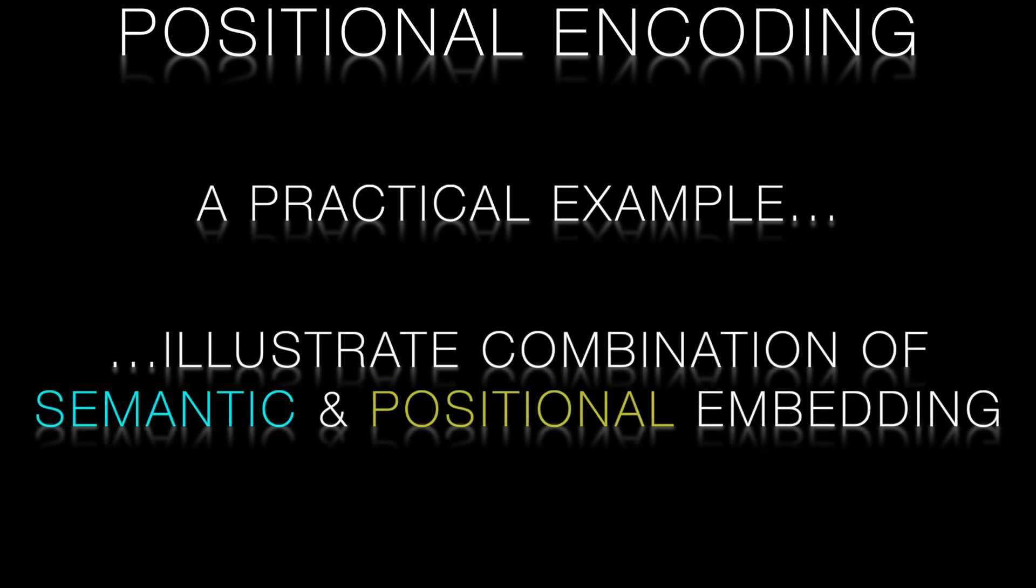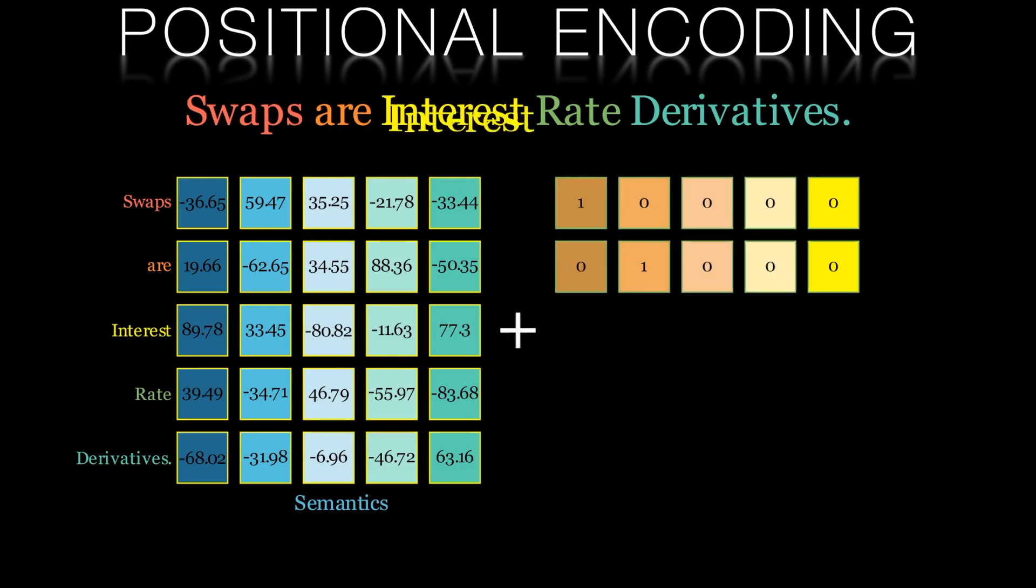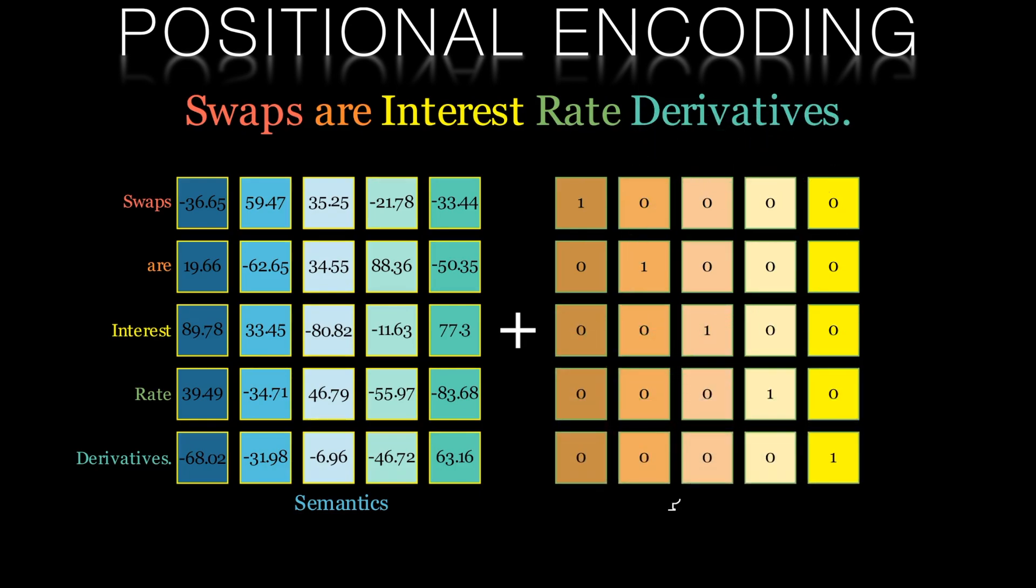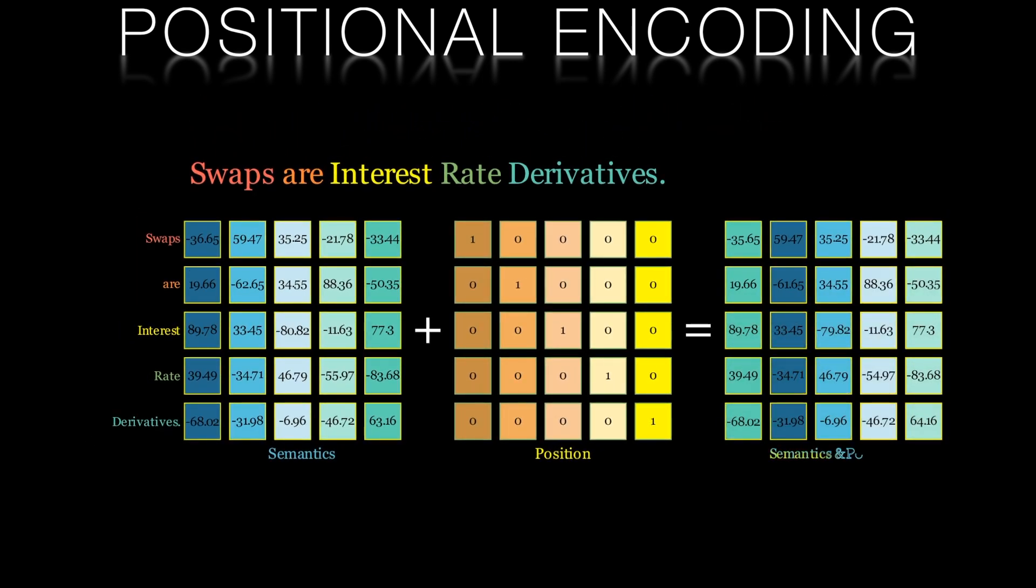Let's look at a practical example to get to grips with some of these ideas. This will also illustrate how semantic embeddings and positional encodings work together. We'll start with a simple sentence: swaps are interest rate derivatives. We can then write out the vectors that represent these words in our embedding space. These vectors will typically be hundreds of elements long, which is too long to fit on your screen, so we'll illustrate the concept with a smaller vector of just five elements. To encode position, let's employ our familiar friend, one-hot encoding, as our initial representation. When we add these position vectors to our semantic embedding, we get the vectors on the right. This will give us a different vector depending on where the word is in the sentence.